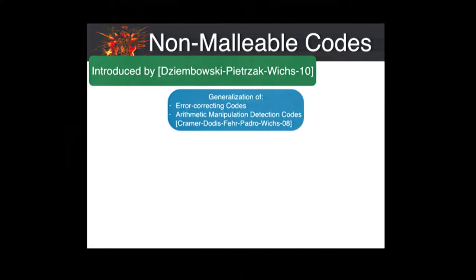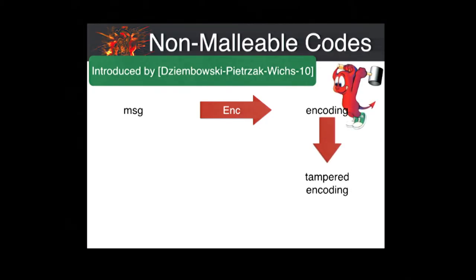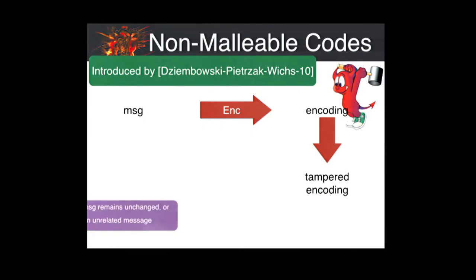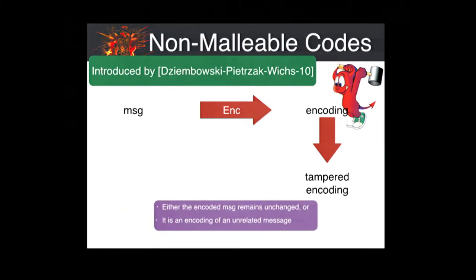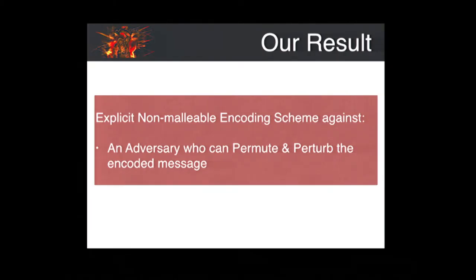In this setting, we have the following guarantee. Suppose a message is encoded using a non-malleable encoding scheme. Suppose an adversary comes along and tampers with the encoding. Then the message encoded inside this tampered encoding will exhibit either of the following two properties: it will either be the original message itself, or it will be a message which is completely unrelated to the message which was encoded originally.